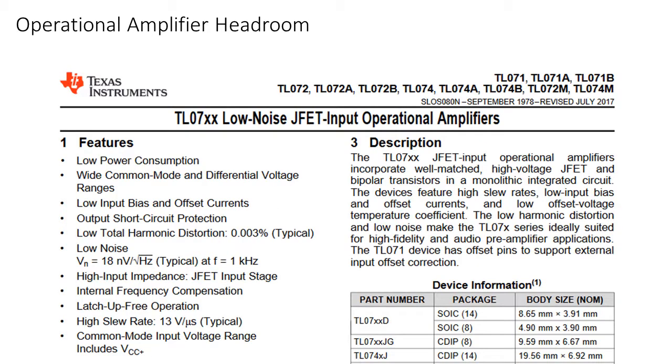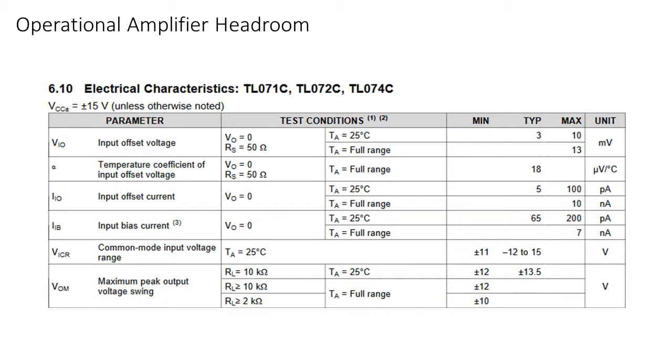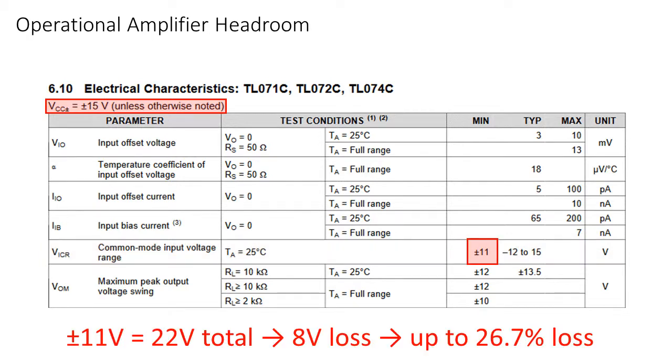Let's take the TL07 series op-amps for example. The restriction for the input is given as common mode input voltage range. This means that on a dual supply voltage of plus and minus 15V, for a total of 30V, the input can only process a range of 22V in a worst case scenario.